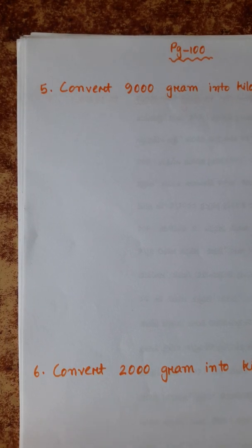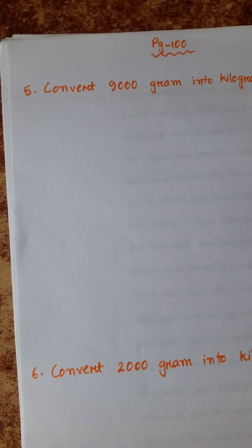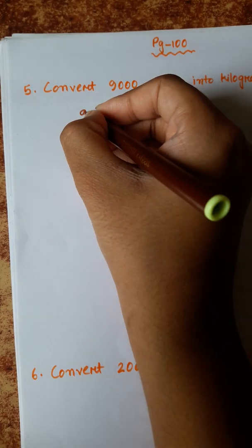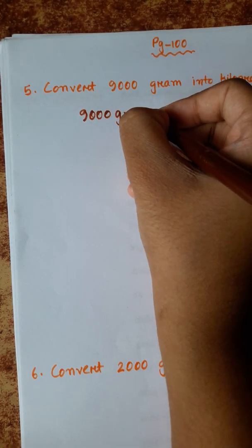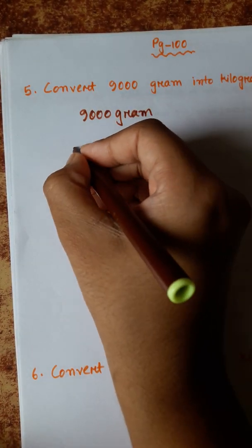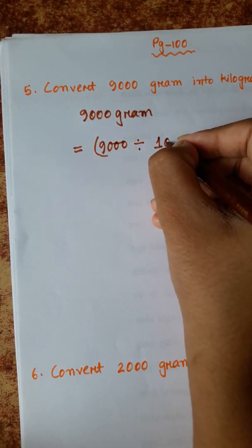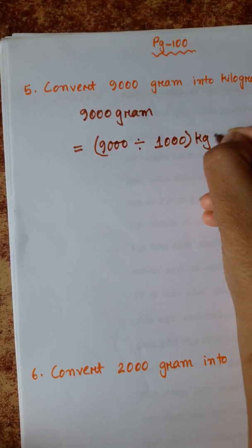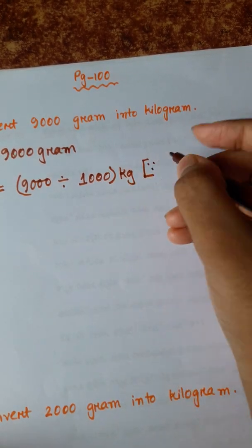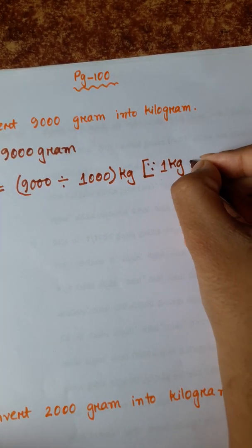Now next problem number five, convert 9000 gram into kilogram. In the previous problems we converted kilogram to gram by multiplication, now we need to convert gram to kilogram by division.